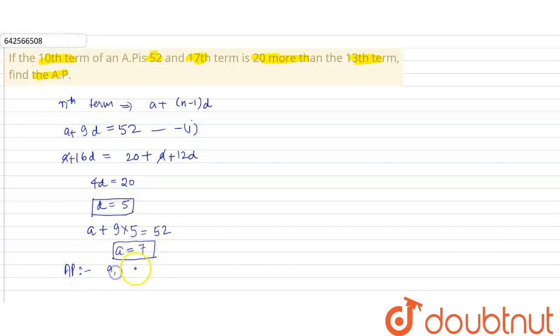a, a+d, a+2d, a+3d, a+4d, and so on. So we have 7, 7+5, 7+5×2, 7+5×3, and so on.